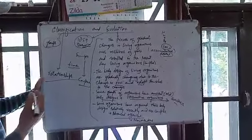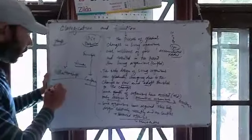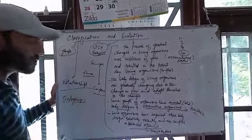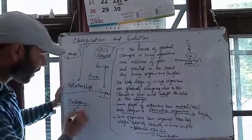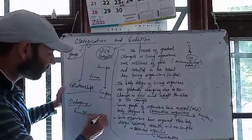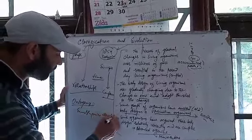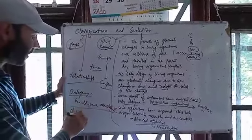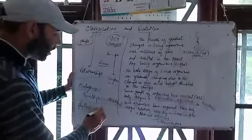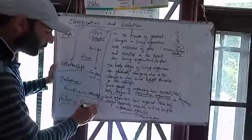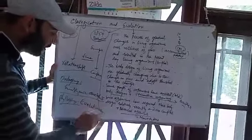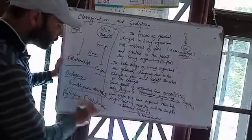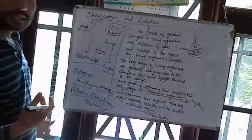Nowadays, classification is also based on ontogeny and phylogeny. Ontogeny refers to embryonic development — the development of an organism from embryo to adult. Phylogeny means evolutionary relationships — the developmental relationships showing how organisms are related through evolution.